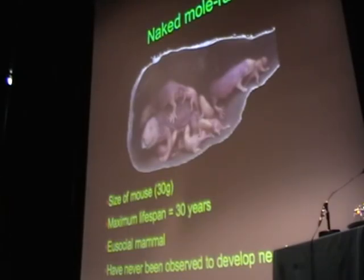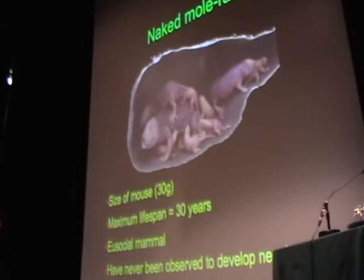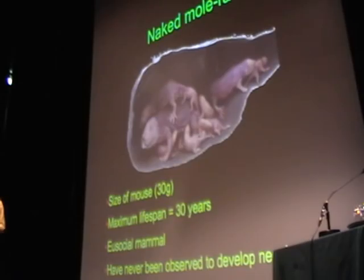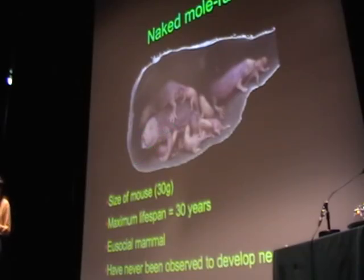Another interesting feature is that it's a eusocial mammal. Here you can see the queen, the pups or babies, and the workers taking care of the pups. This 30-year maximum lifespan applies not only to queens but also to workers — they all live for 30 years. When the queen dies, one of the females from the colony will take her place, meaning they can exchange roles in the colony.